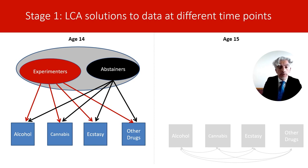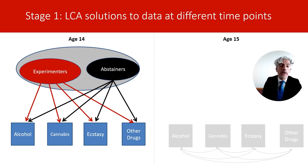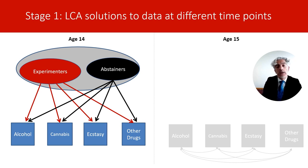Note that when I introduced the latent classes, the associations between indicators disappeared. This is to represent the key assumption of latent class analysis: that of conditional independence. This assumes that the indicators are independent conditionally on latent class membership — that is, what explains the associations between observed behaviors is the underlying latent class.